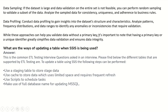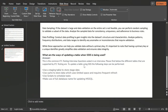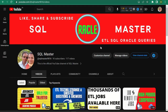The next question is: what are the ways of updating a table when SSIS is being used? This is a common ETL testing interview question. To update a table using SSIS, the following steps can be performed: use a staging table to store the staged data; use cache to store the data, which uses limited space and requires frequent refresh; use scripts to schedule tasks; and make use of the full database name for updating in MS SQL.